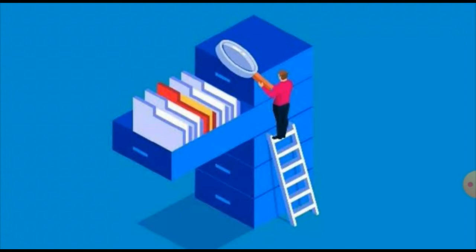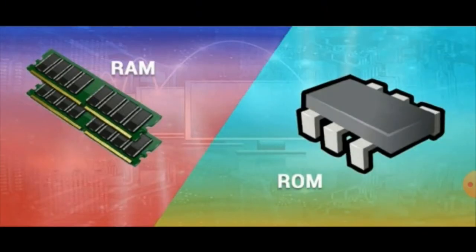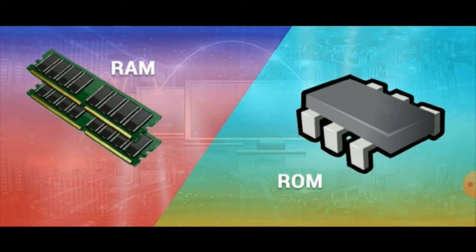In the previous classes I explained topics like what is memory, where a computer stores its data, and how it can be retrieved. I told you about RAM and ROM — what is RAM and what is ROM. Random Access Memory: RAM is a temporary memory; when your computer is running, RAM is available and you can use it.